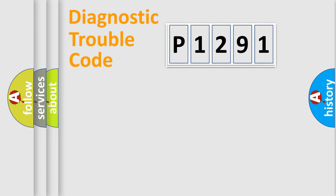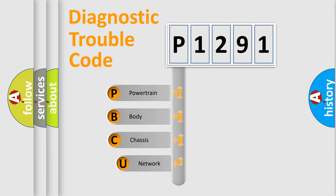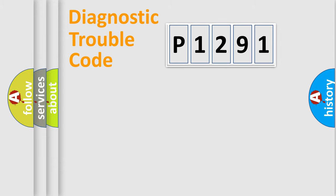Let's do this. First, let's look at the history of diagnostic fault code composition according to the OBD2 protocol, which is unified for all automakers since 2000. We divide the electrical system of the automobile into four basic units: Powertrain, Body, Chassis, and Network.